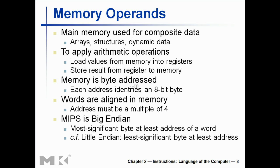Each instruction is a word and they are aligned in memory, meaning after one word you have another. So if I have instruction 1, immediately instruction 2 is there after instruction 1, which is 32 bits away. This will become more clear once we get to it. As I mentioned, we have 32 bits.